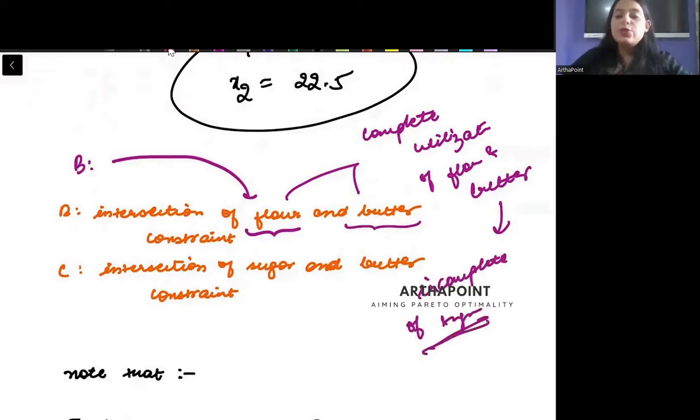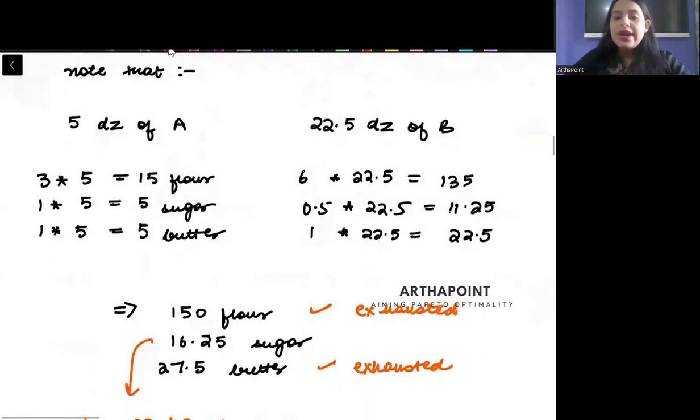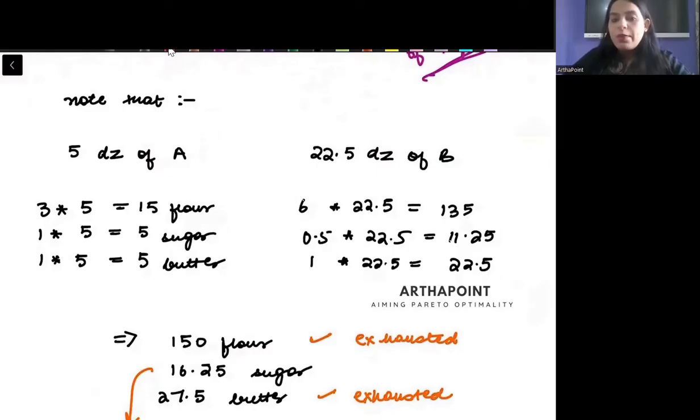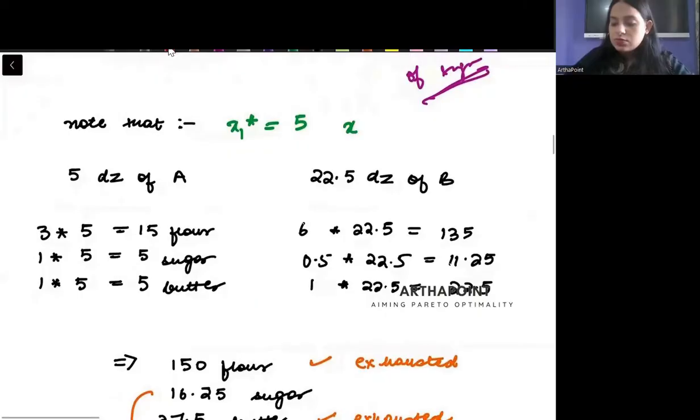Sugar is not completely utilized. And in order to show you that, what we can do is the following. We will go back to the amount of cake A and cake B produced. What is my X1 star? 5. What is X2 star? 22.5.